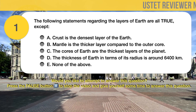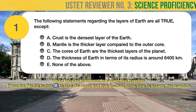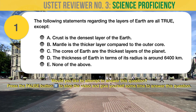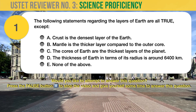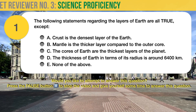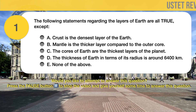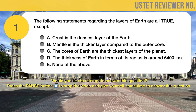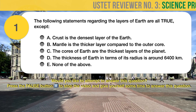Question number 1. Earth science. The following statements regarding the layers of earth are all true, except. A. Crust is the densest layer of the earth. B. Mantle is the thicker layer compared to the outer core. C. The cores of earth are the thickest layers of the planet. D. The thickness of earth in terms of its radius is around 6,400 kilometers. E. None of the above.